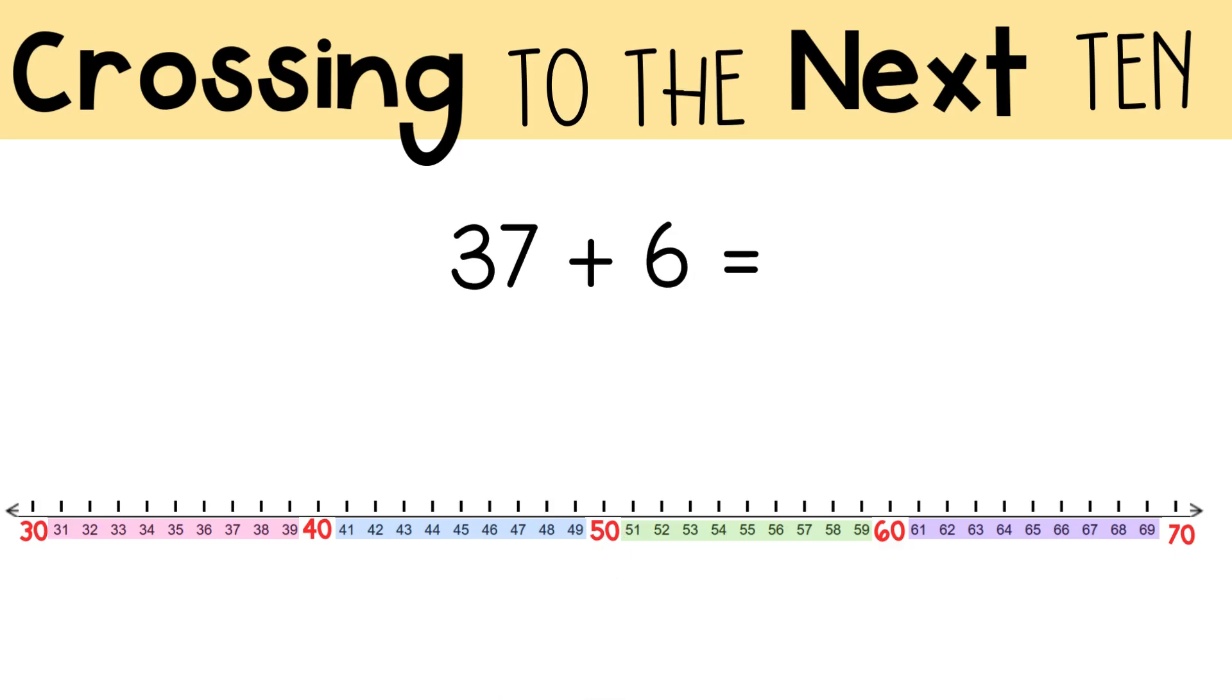Let's do 37 plus 6. We'll start at 37. Can you figure out how many jumps I need to cross to the next 10? The next 10 is 40, and we need 3 jumps to get there. We were supposed to add 6. So far, we've added 3.